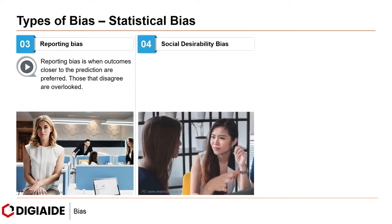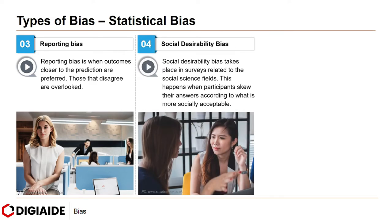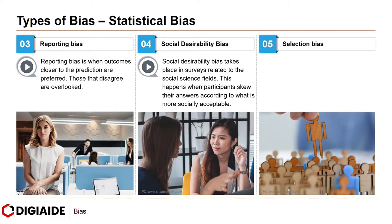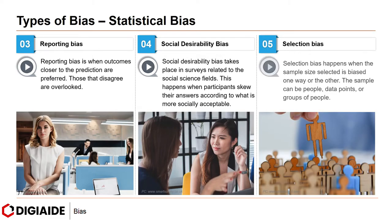Then comes social desirability bias. Social desirability bias takes place in surveys related to the social science fields. This happens when participants skew their answers according to what is more socially acceptable. And finally, selection bias. Selection bias happens when the sample selected is biased in one way or another — the sample can be people, data points, or groups of people. This bias might also be intentional or unintentional, and the sample might not end up representing the larger population at all.